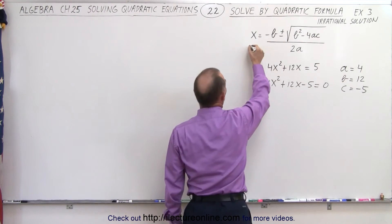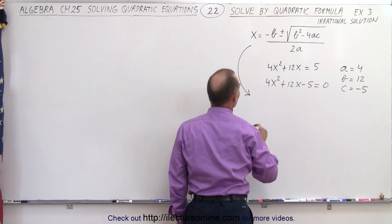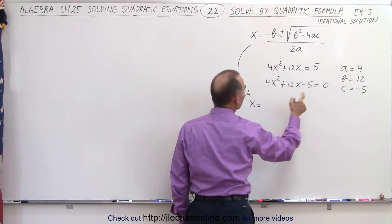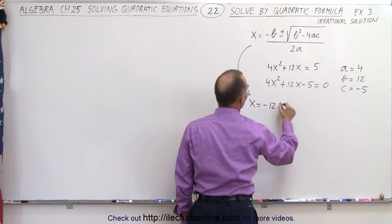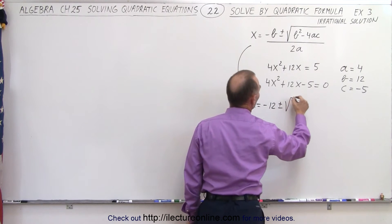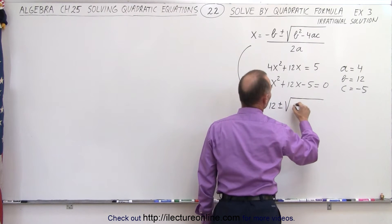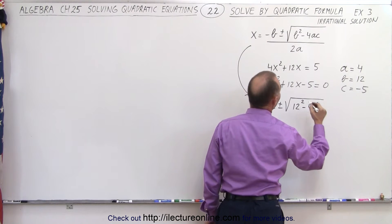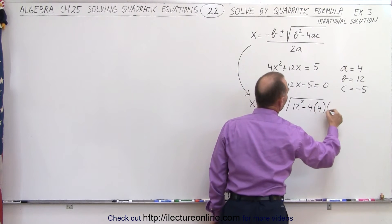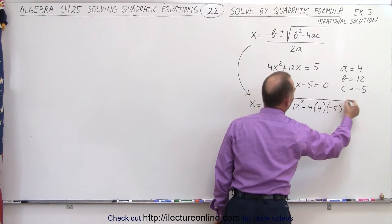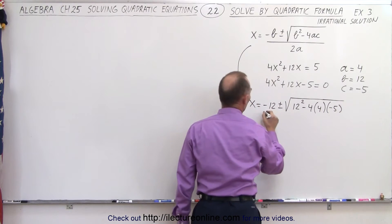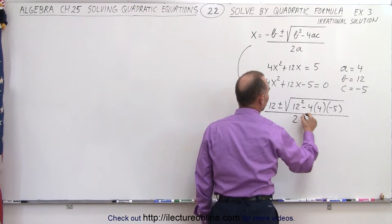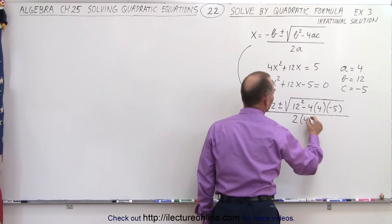Next, plug those numbers into the quadratic formula. So x = −b, which is −12, plus or minus the square root of b squared (12²) minus 4 times a (which is 4) times c (which is −5), all divided by 2 times a, and a = 4, so 2 times 4.